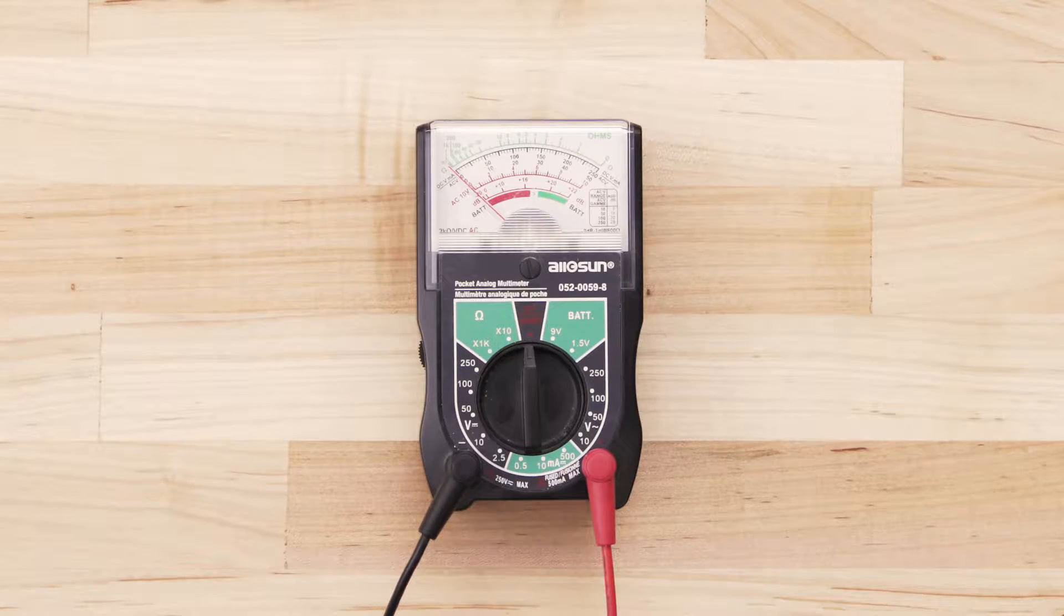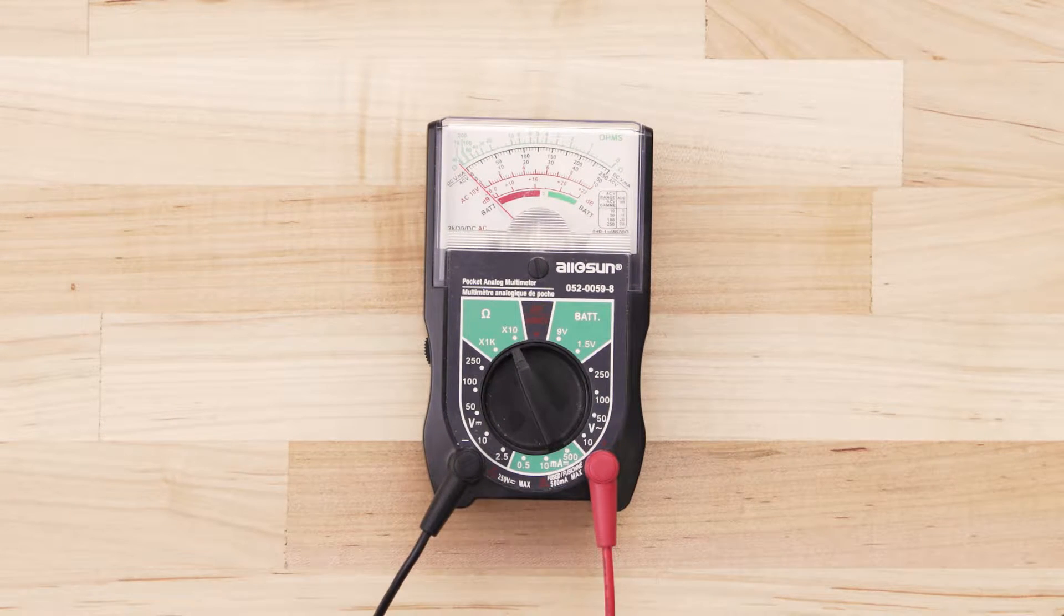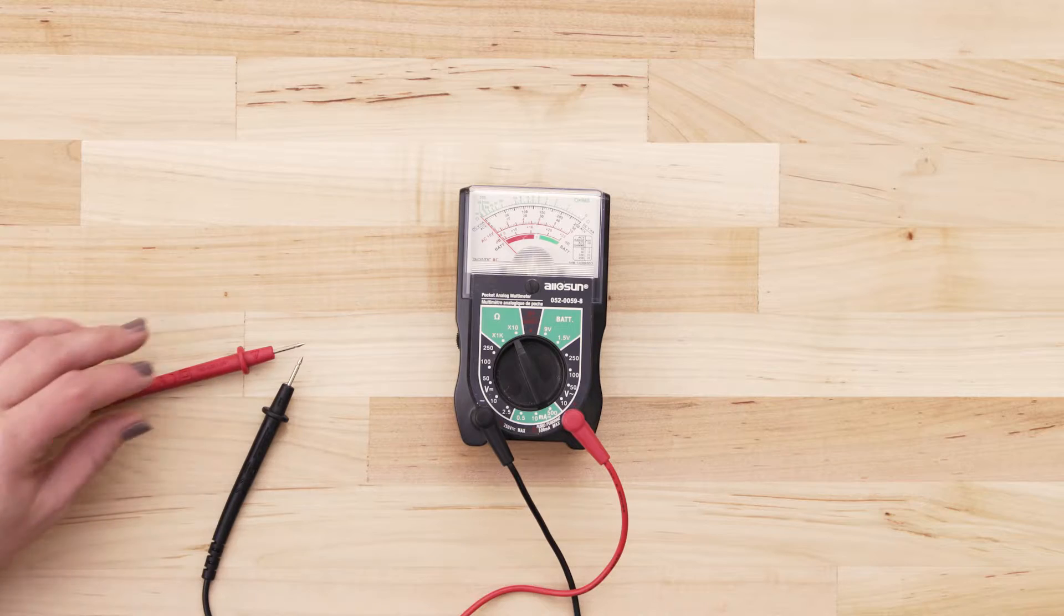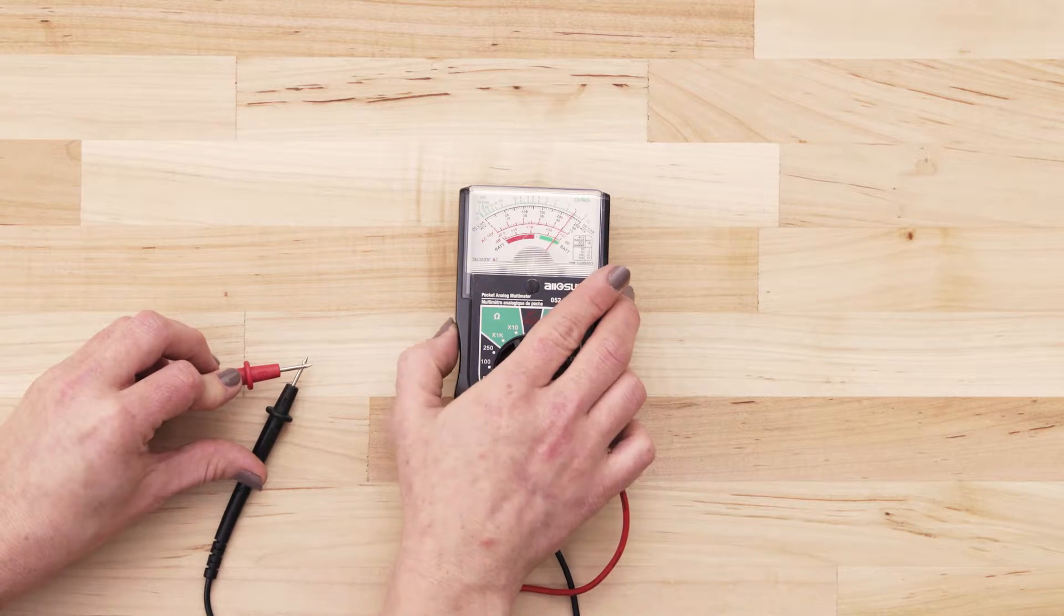If you use an analog multimeter, set the multimeter to the lowest ohms of resistance. Next, touch the probes together and adjust the needle until it's calibrated at zero.